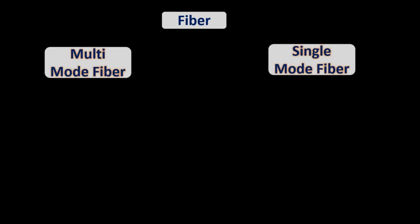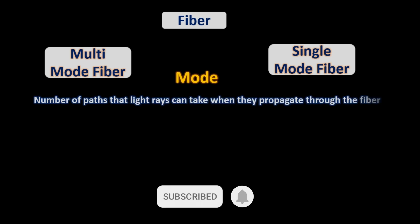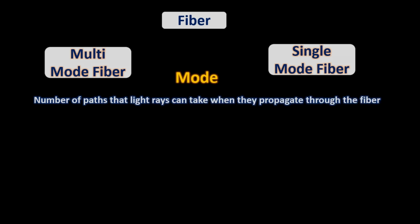Fiber, as we all know, is used to carry the signal. There are two types of optic fibers: multi-mode and single-mode. Many times people are confused about what mode means here. Mode means the number of paths that light rays can take when they propagate through the fiber.